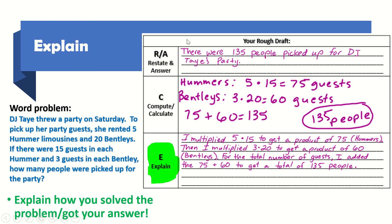Notice that it says rough draft here. This is how we set up our rough draft — this is not our final answer. This is us organizing our writing and making sure that we are using the RACE strategy to answer each part correctly and clearly. So now let's look at what a final answer looks like where we put these things together for our final paragraph.